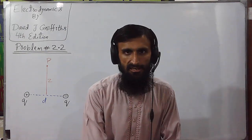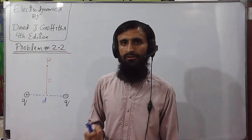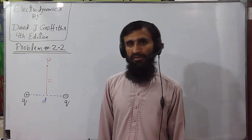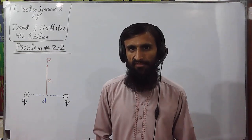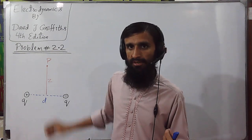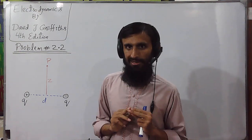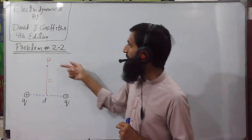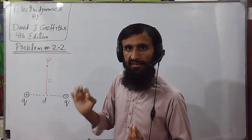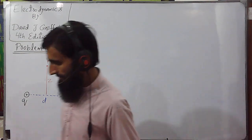Assalamualaikum. Hello students, today we have to solve problem number 2.2 of Electrodynamics by David J. Griffiths, fourth edition. In this problem we have been asked to find the electric field at some point P, at a distance z apart from the midpoint of a line joining two equal and opposite charges. Let us find our required electric field at this point P, which will be the net electric field due to these two individual point charges.